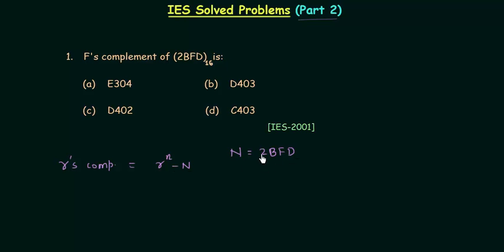Counting the digits: 1, 2, 3, 4 — so we have 4 digits. Small n is equal to 4 and r is equal to 16 because it is a hexadecimal number.